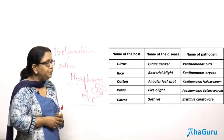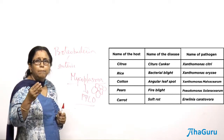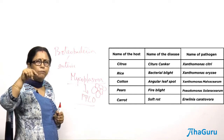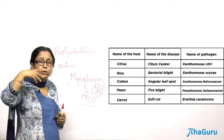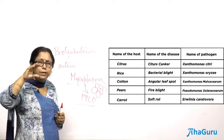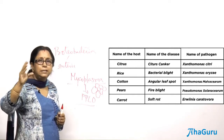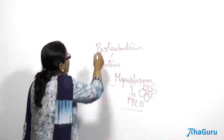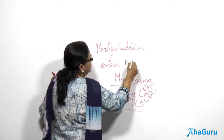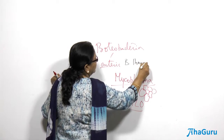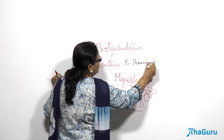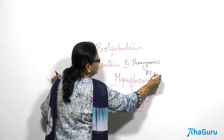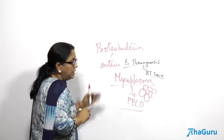One toxin produced by the bacterium Bacillus thuringiensis is called Bt toxin. It is very useful as a natural pesticide because it is toxic to insects that feed on it. This bacterium is heavily used in genetic engineering.